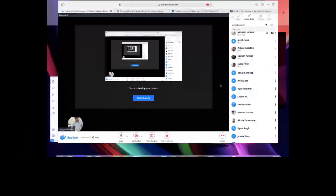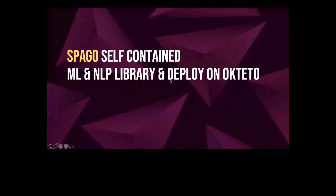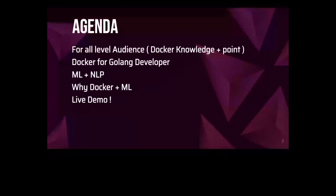My screen is visible to you. Today's topic and agenda is Spargo, a self-contained ML and NLP library, and deploying on Kubernetes. The agenda of today's session is for those who want to learn how to Dockerize a Go application or any application. It's a plus point if you already know Docker, and also for those who want to learn Go and machine learning and NLP libraries — Spargo is one such library.